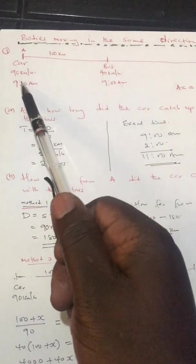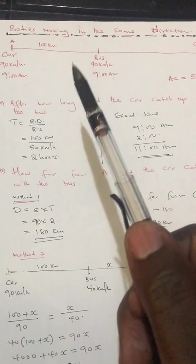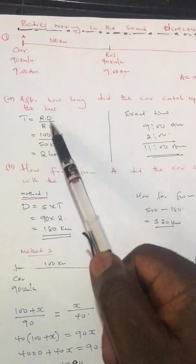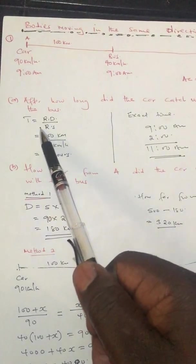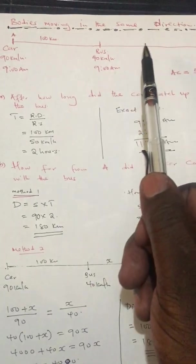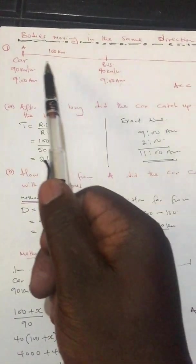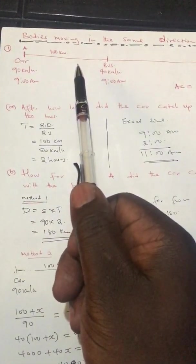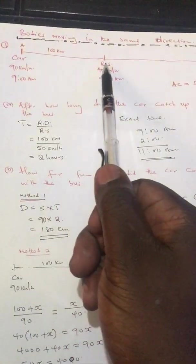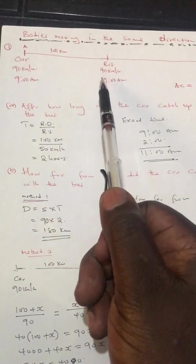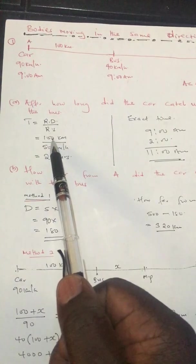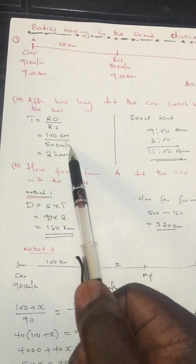When reading a question, identify whether bodies are moving in the same direction or opposite direction — that's where the key trick lies. The formulas don't change: time equals relative distance over relative speed. The relative distance is the distance between the two bodies before they are both moving, which here is 100 km. The relative speed is 90 minus 40, which is 50 km/h. So time equals 100 divided by 50.